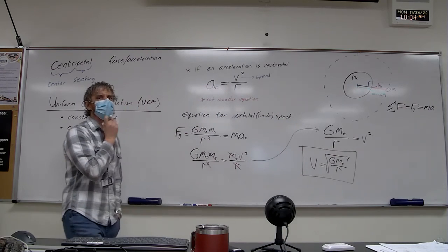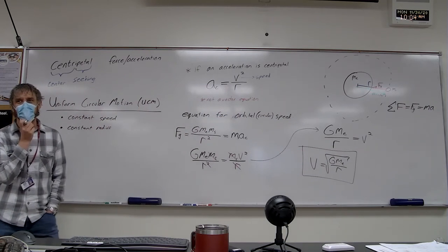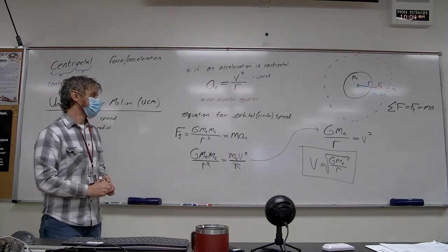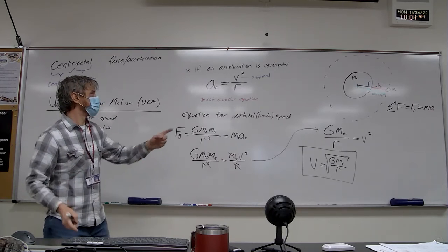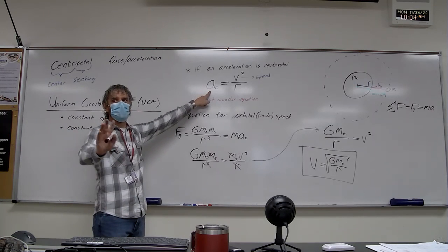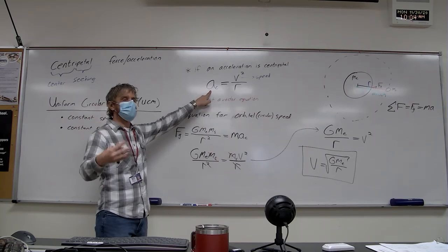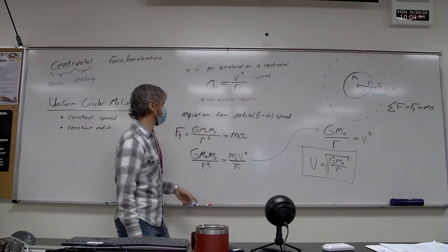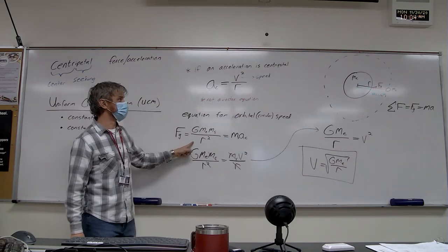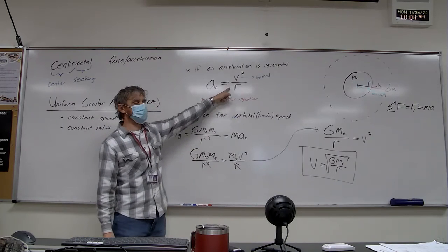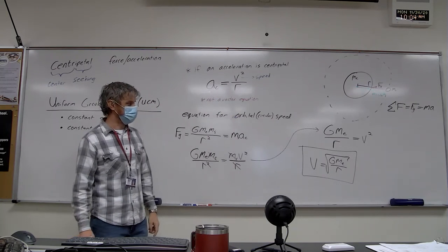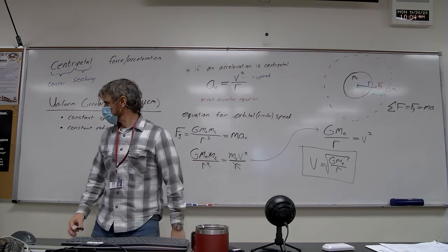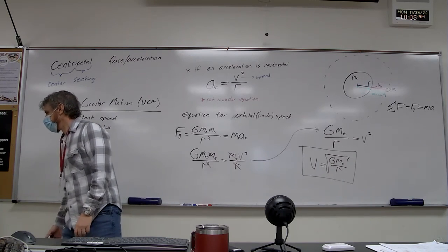This equation for orbital speed is not on the formula sheet, but it is very often seen on the AP exam. It's your job to understand how to derive it using things that are on the formula sheet: Newton's law of universal gravitation and the equation for centripetal acceleration.